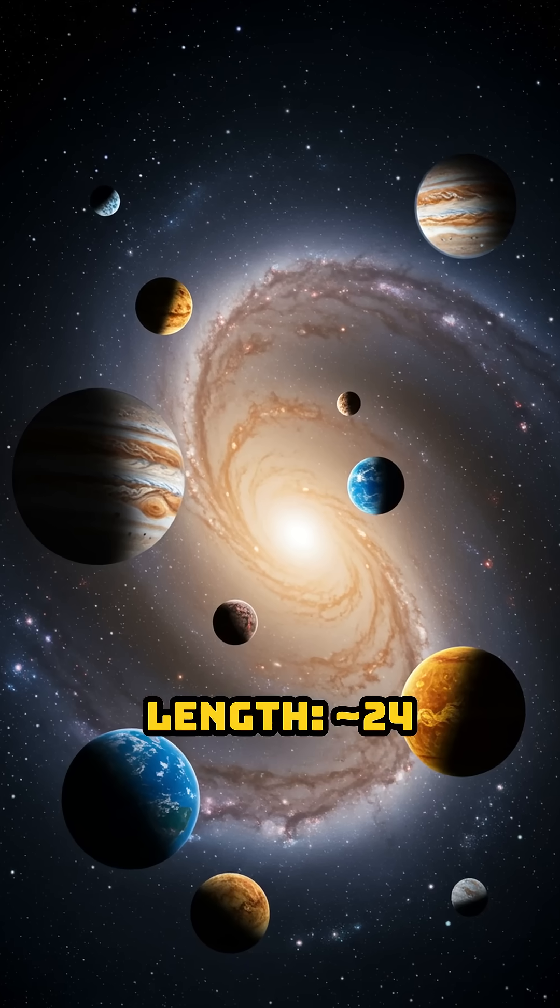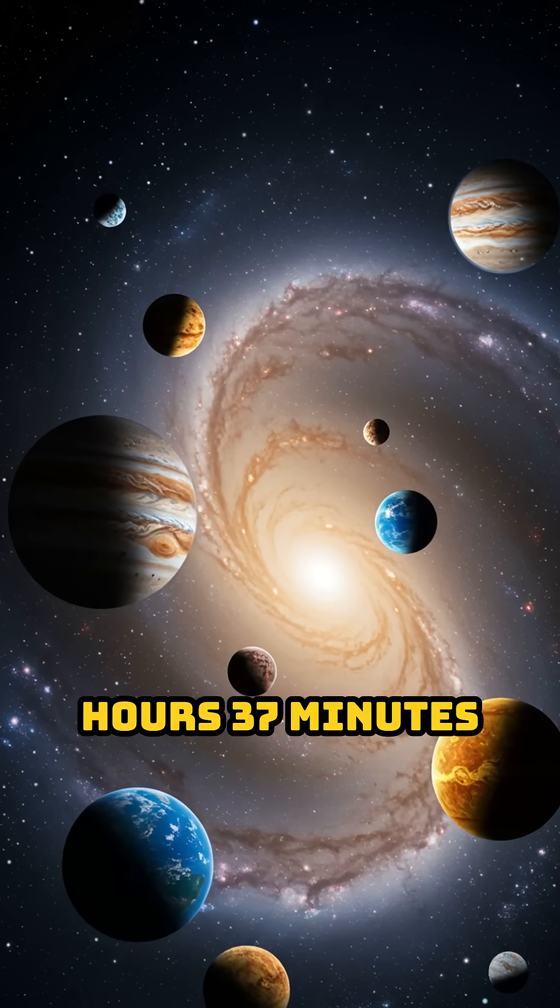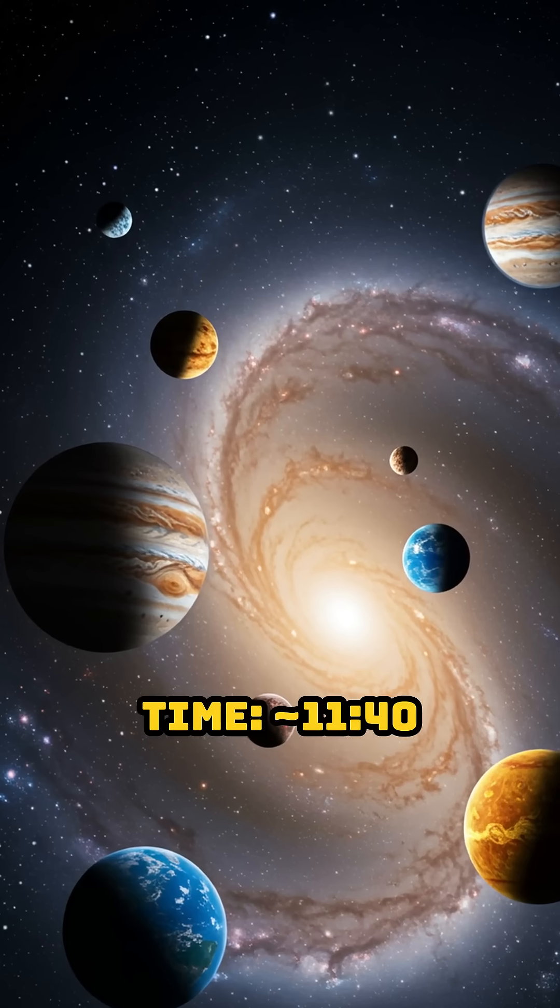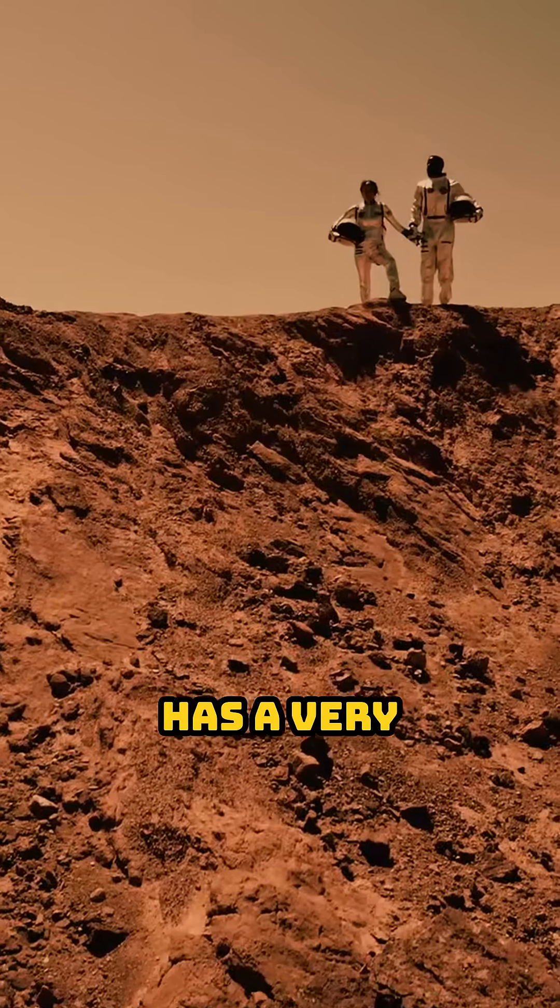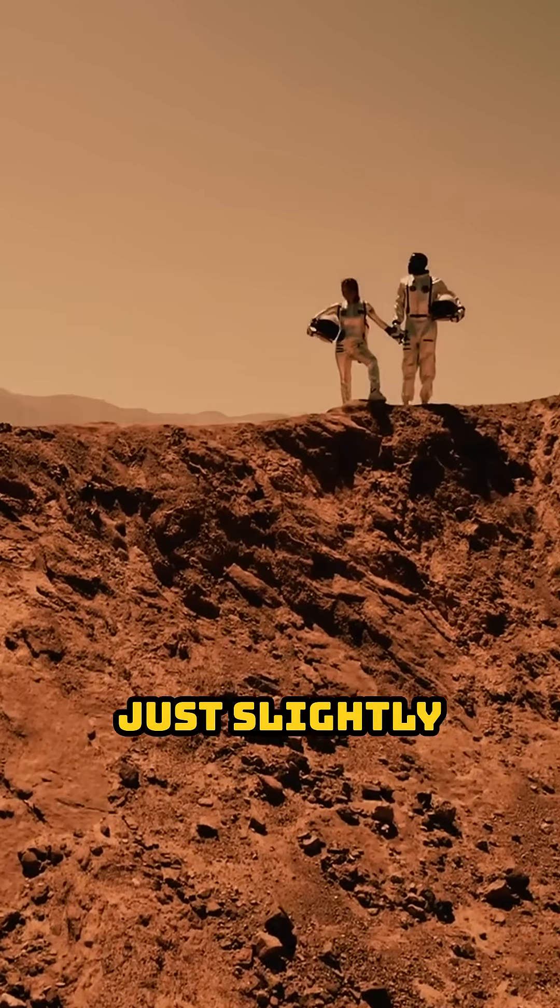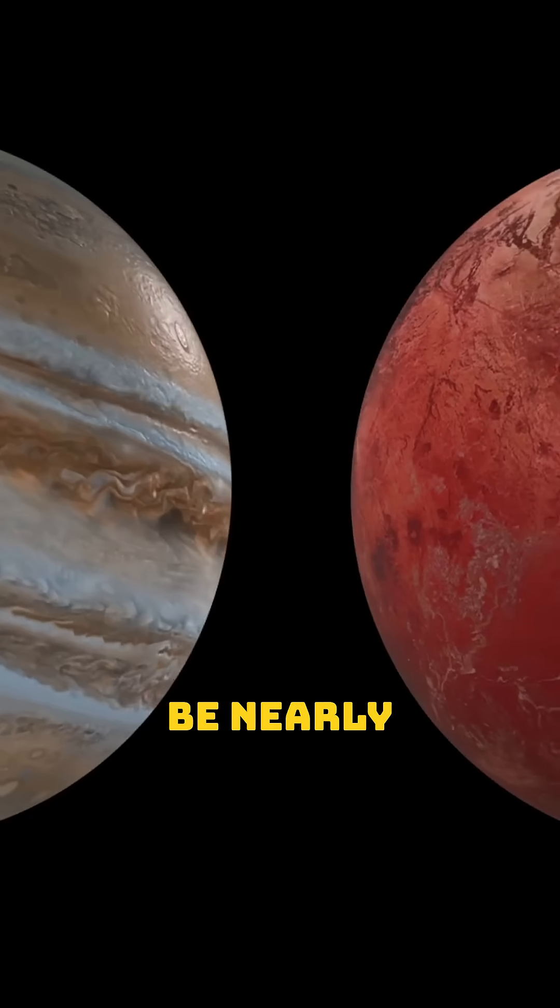Number 4: Mars. Day length 24 hours 37 minutes, current time 12:41 PM. Mars has a very similar day to Earth's, just slightly longer. Time would be nearly the same.